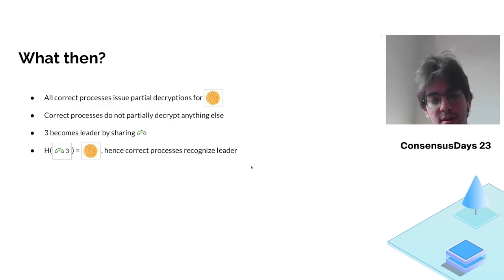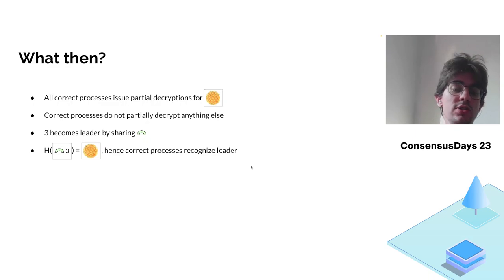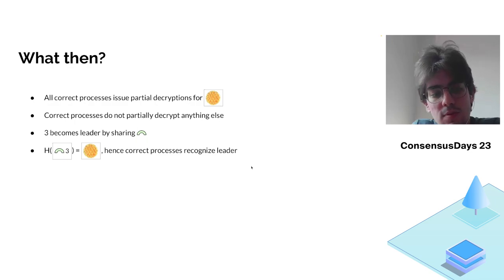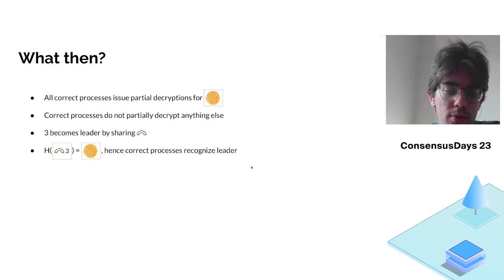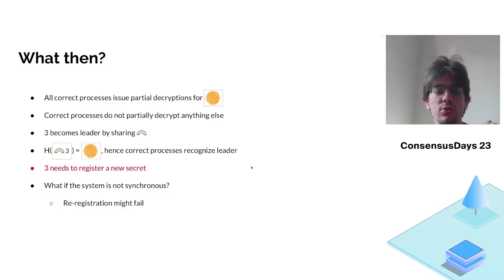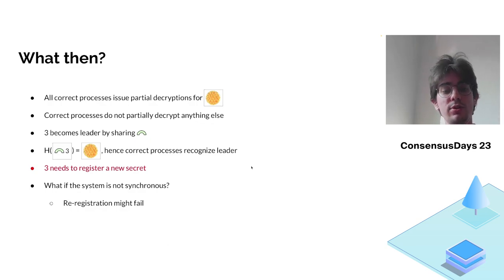Now that we have the cake, process 3 claims the election by sharing the secret. All processes hash it together with the ID '3' and verify it matches the cake, recognizing process 3 as the leader. However, this is an incomplete version of the protocol: process 3 must register a new secret because if they want to participate again they cannot reuse the same one, since all processes already know it refers to them.